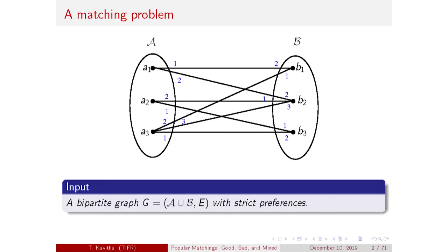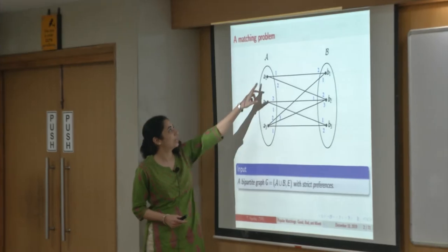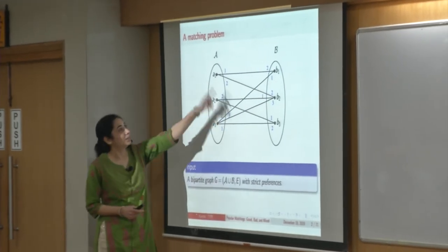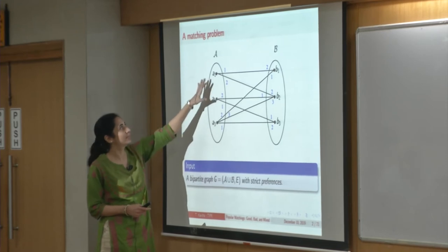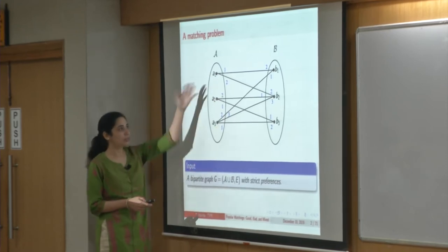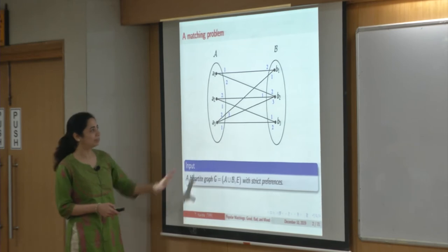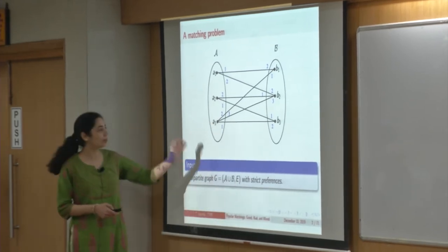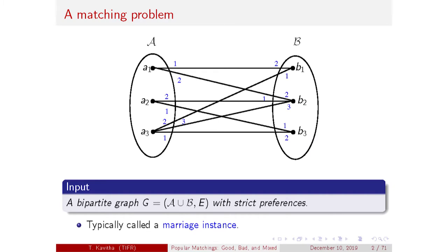The input here is a stable marriage instance: a bipartite graph where every vertex has a strict ranking of its neighbors. So A1 regards B1 as its top neighbor, B2 as its second-choice neighbor, and there is no edge between A1 and B3, and so on. The two sides of the bipartite graph are usually called men and women — this is traditionally called a marriage instance.